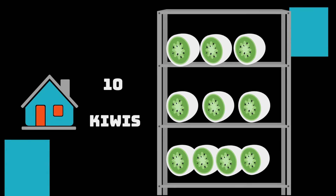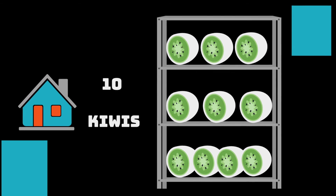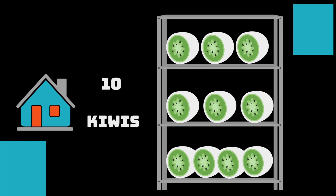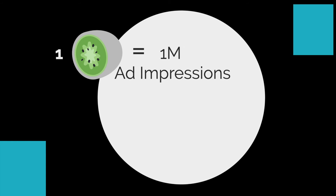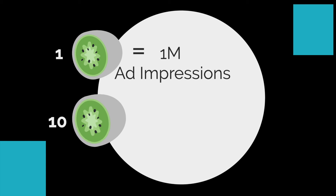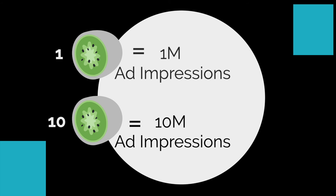Now let me give you an example. Let's imagine you are a shop owner and you have 10 Kiwis in your storage. Storage represents your ad inventory. Each of the Kiwis represents one million ad impressions, which in total gives you 10 million ad impressions.